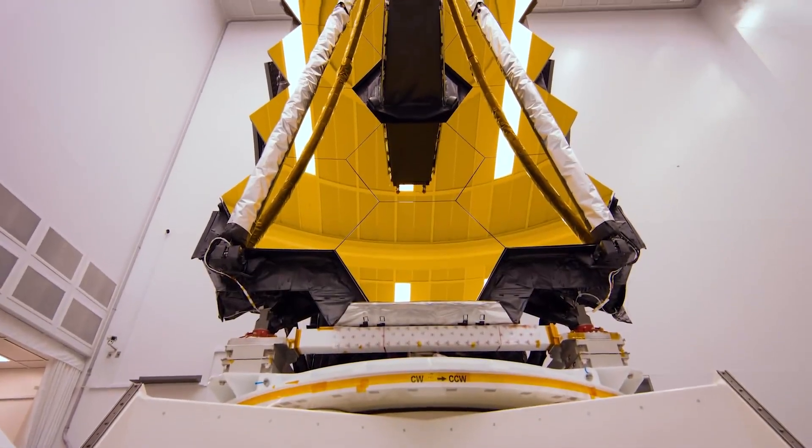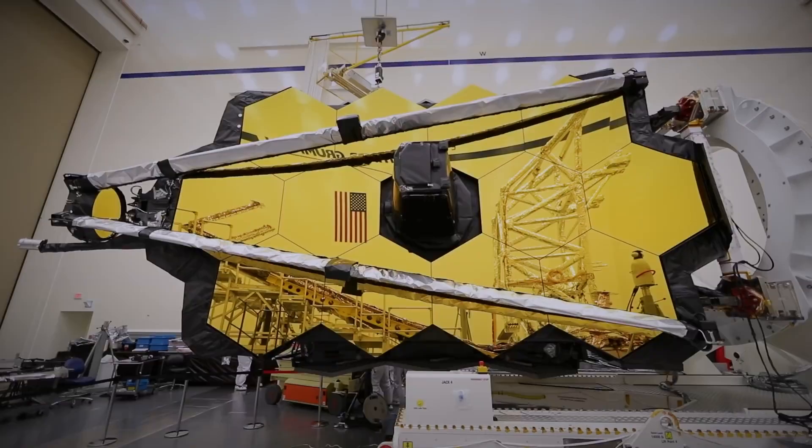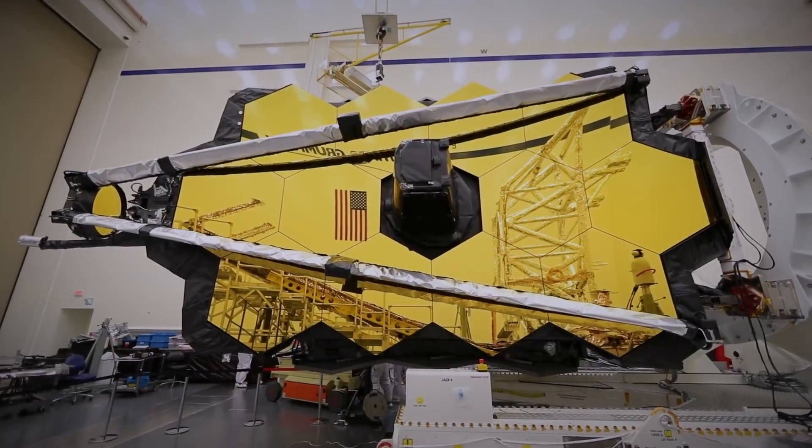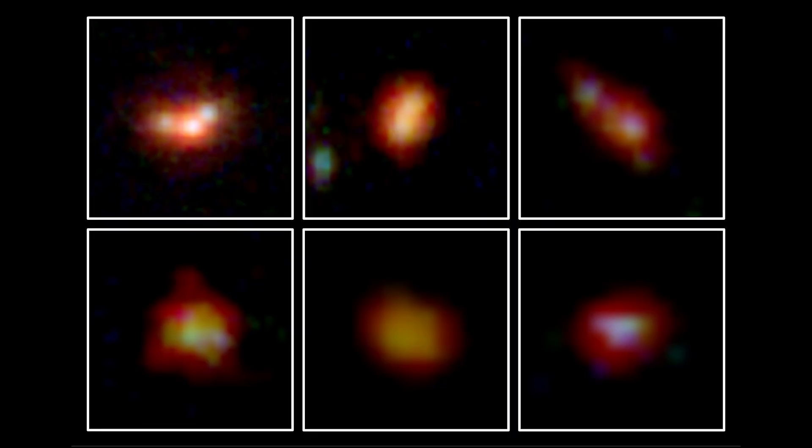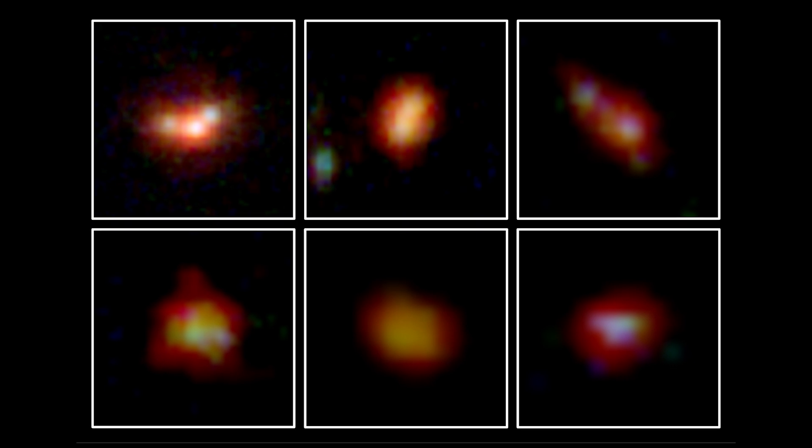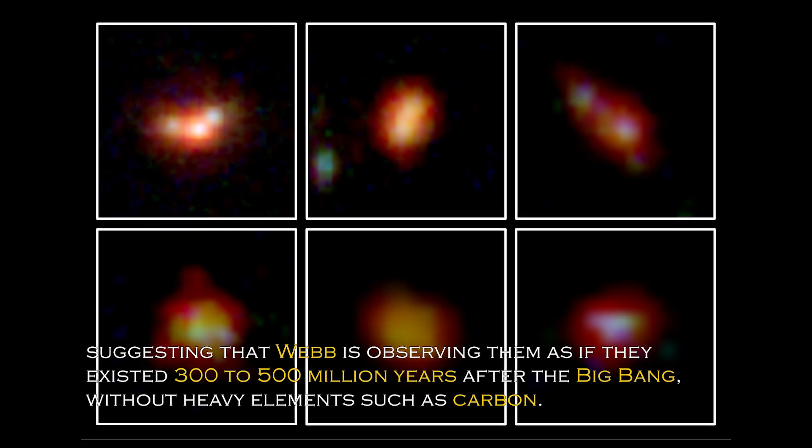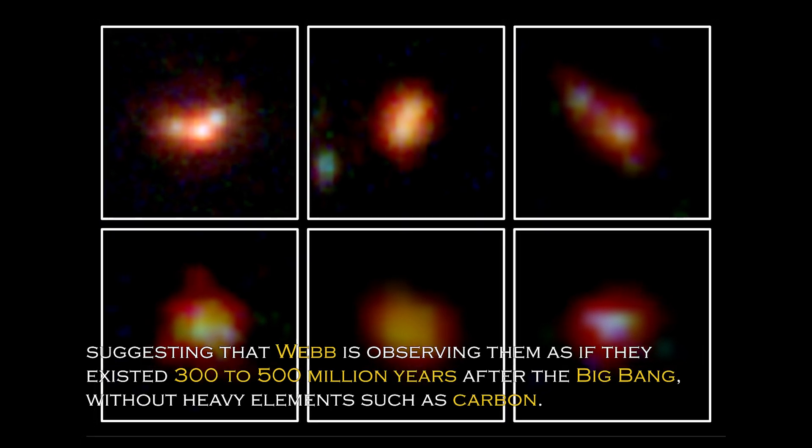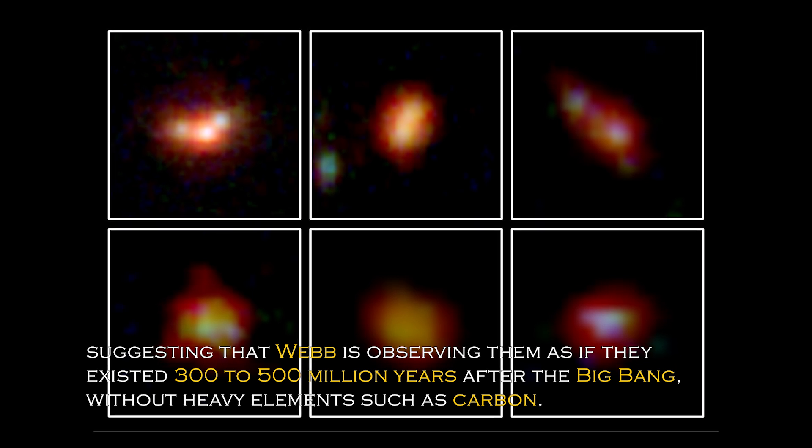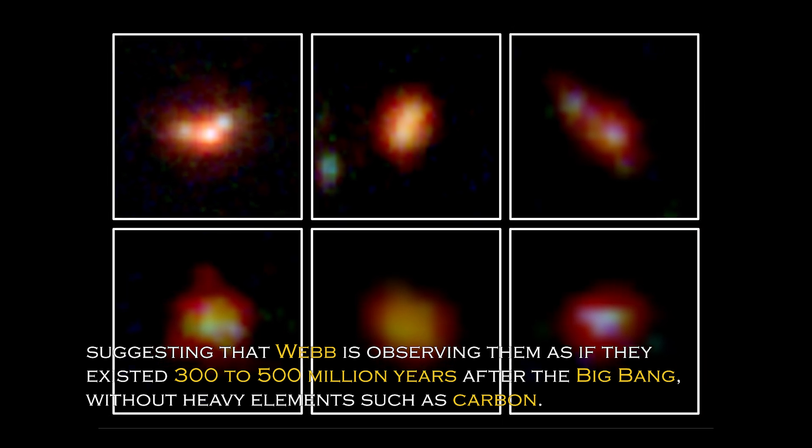Data obtained from Webb's spectrometer and near-infrared camera have revealed that four of the six primordial galaxies have extreme redshifts, suggesting that Webb is observing them as if they existed 300 to 500 million years after the Big Bang, without heavy elements such as carbon.